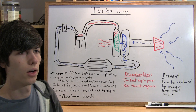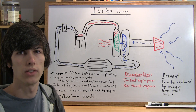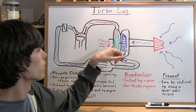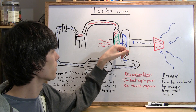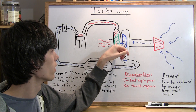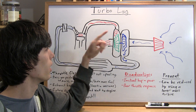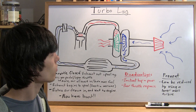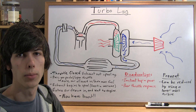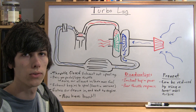One way this can be prevented is to use lightweight, low-mass turbines so that just a small amount of exhaust gas can spool them up. And that is turbo lag and how it works.